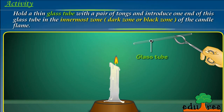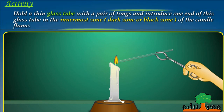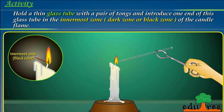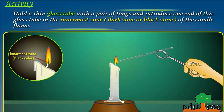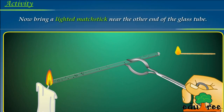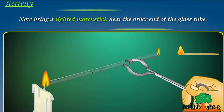Hold a thin glass tube with a pair of tongs and introduce one end of this glass tube into the innermost zone, dark zone or black zone of the candle flame. Now, bring a lighted matchstick near the other end of the glass tube.